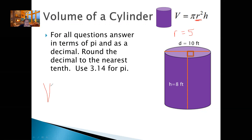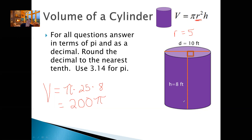Then you would do volume equals pi times 5 squared, which is 25, times 8. 25 times 8 is 200. You can use a calculator — most likely your teachers are going to let you use calculators at this level. So if we're going to leave it in terms of pi, that's our answer: 200 pi. But we're going to round to the nearest tenth after multiplying 200 times 3.14. What is 200 times 3.14? 628. So we don't have to round to the nearest tenth because there are no decimals — it's just 628.